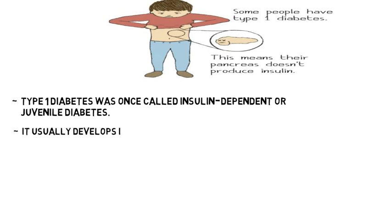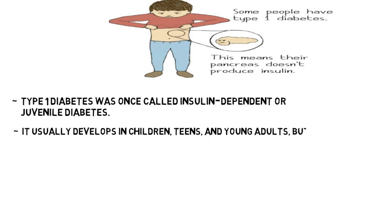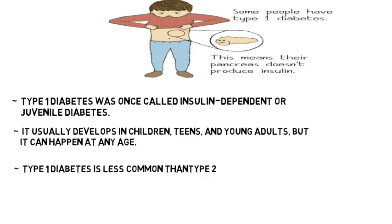It usually develops in children, teenagers, and young adults, but it can happen at any age too. Type 1 diabetes is less common than type 2 diabetes.